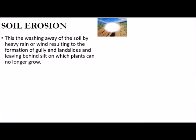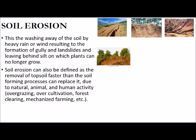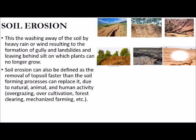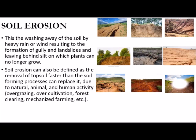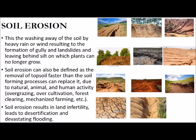Soil erosion is the washing away of the soil by heavy rain or wind, resulting in the formation of gullies and landslides, and leaving behind silts on which plants can no longer grow. It can also be defined as the removal of topsoil faster than the soil-forming processes can replace it, due to natural, animal, and human activity — for instance, overgrazing, overcultivation, forest clearing, and mechanized farming. Soil erosion results in land infertility, which leads to desertification and devastating flooding.